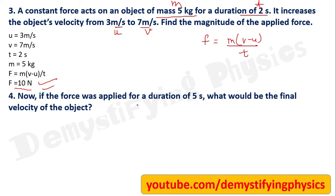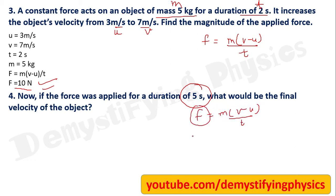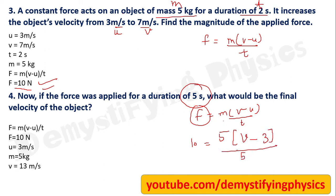If the same force of 10 Newton acts for 5 seconds instead, we use the same formula to find the final velocity. Mass is the same, initial velocity is the same, and time is now 5 seconds. Solving gives a final velocity of 13 m/s.